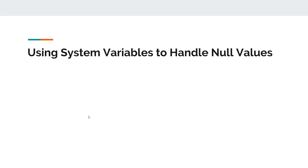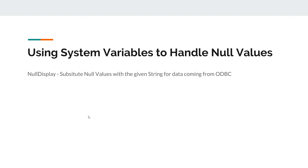Welcome back to the next video. In this video I will show you how you can handle null values coming from various sources like ODBC connection, Excel file, or CSV file. We'll use some system variables provided by Qlik. The first is the NullDisplay variable, which substitutes null values with a given string for data coming from ODBC or database connections.